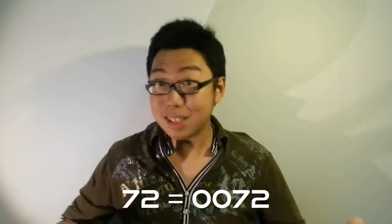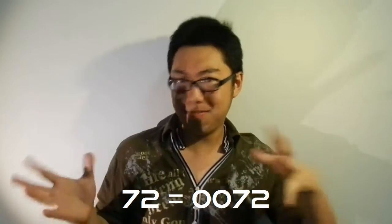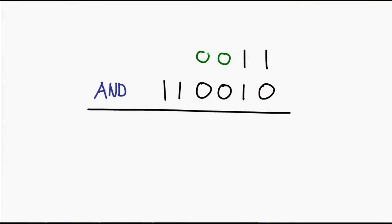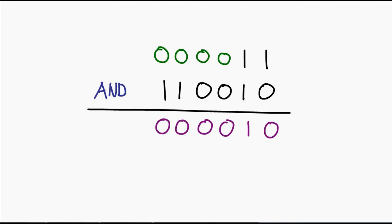Why does that work? Well, if you take a look at the number 72, calling it 0072 will not change its value — it still means the same thing, but now it has a longer length. So if I want to do this operation, all I have to do is pad in all the zeros and perform my operation as per normal.